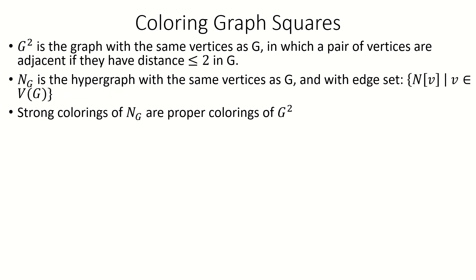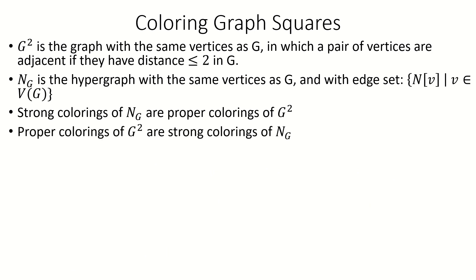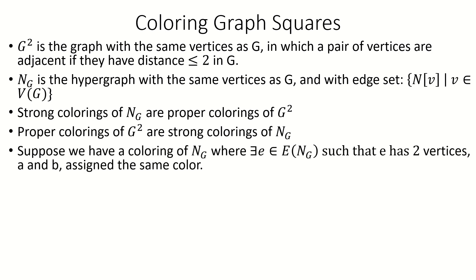In the other direction, every proper coloring of G squared is a strong coloring of N sub G. To show this, suppose that we have a coloring of N sub G that's not strong — that is, there's an edge that has at least two distinct vertices A and B assigned the same color under our coloring.